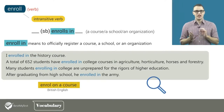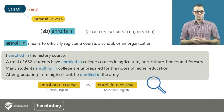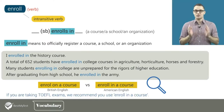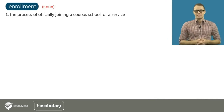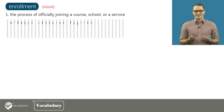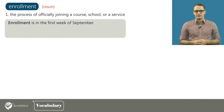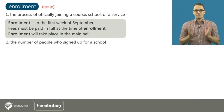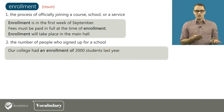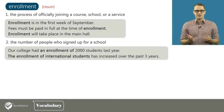Notice that in British English, you often hear 'enroll on a course' instead of 'enroll in a course.' But if you are taking TOEFL exams, we recommend you use 'enroll in a course,' as the 'on' version is pretty much never used in American English. The noun of enroll is enrollment, which has two meanings. The first meaning is the process of officially joining a course, school, or service. For example: enrollment is in the first week of September. Fees must be paid in full at the time of enrollment. Enrollment will take place in the main hall. The second meaning is the number of people who signed up for a school. For example: our college had an enrollment of 2,000 students last year, and the enrollment of international students has increased over the past three years.